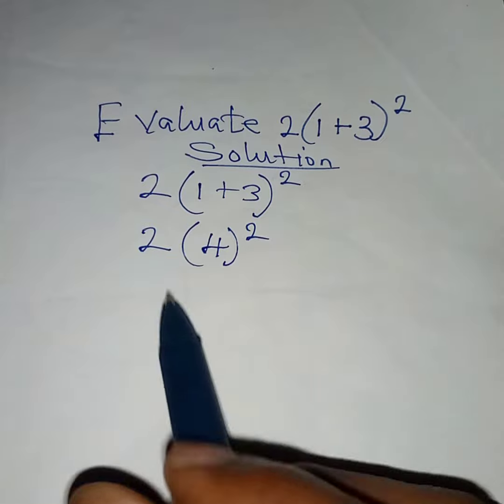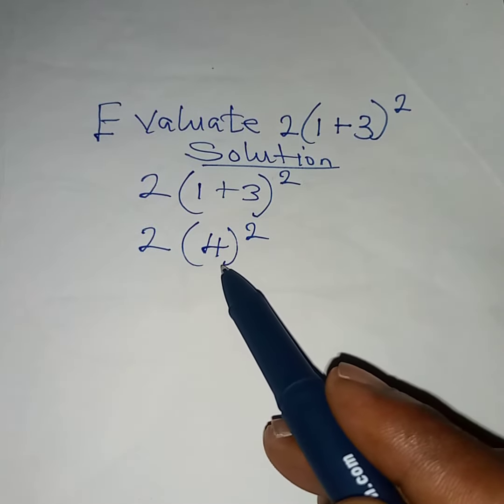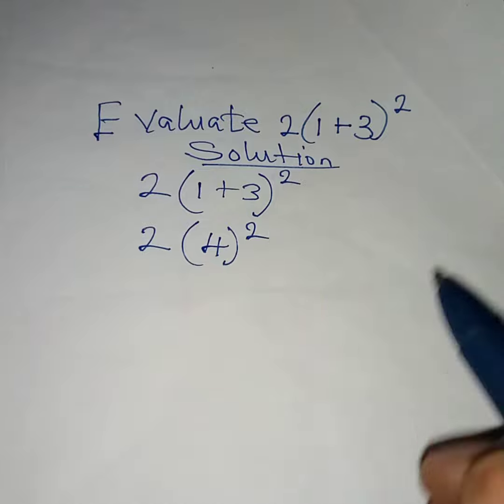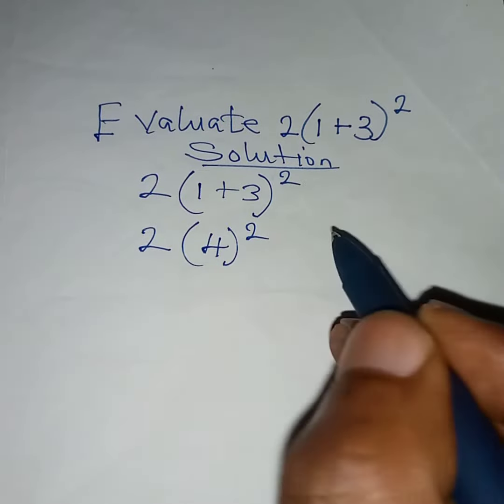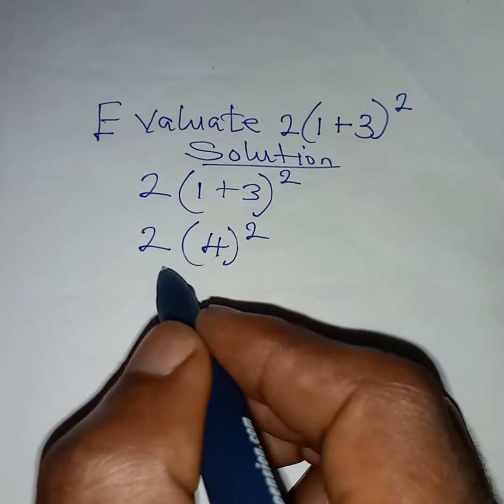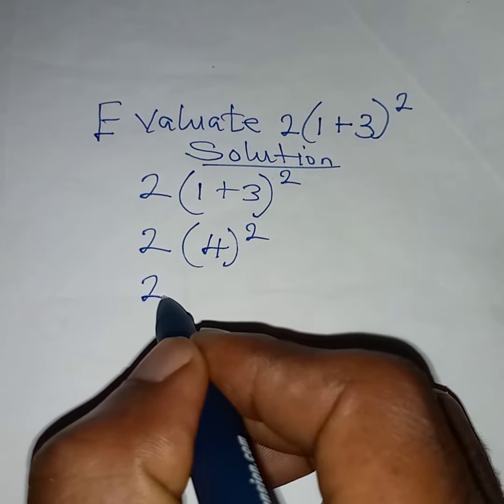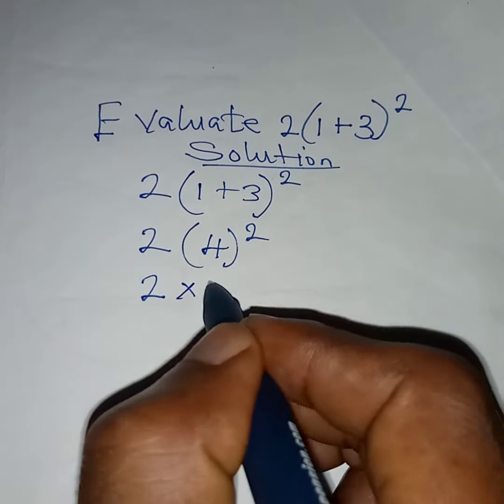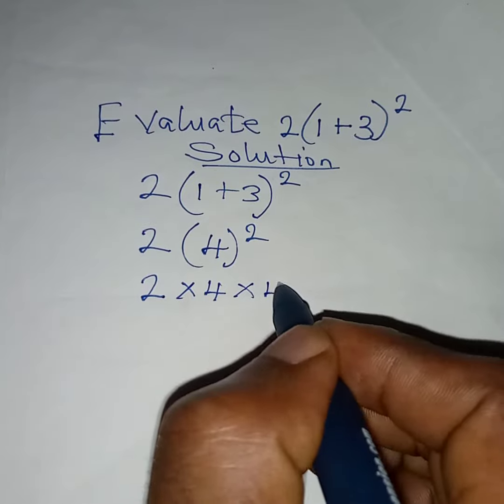Then to power two. From here we can simply raise four to power two to get four times four. So what we're having here now is two, then multiply by four, multiply by four.